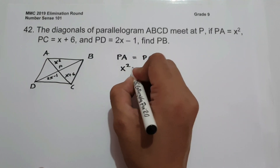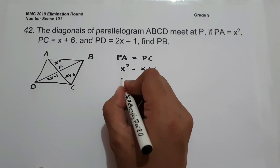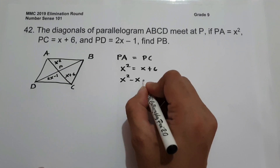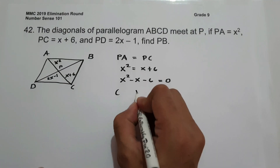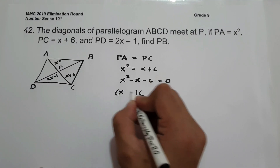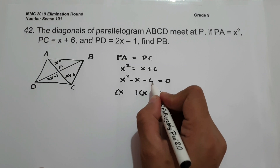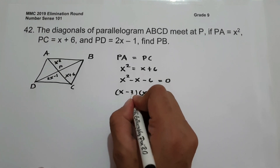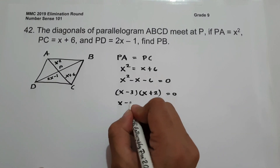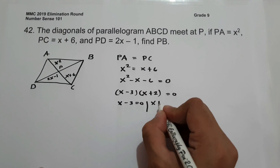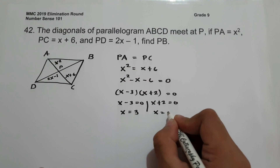So we have x squared equals x plus 6, and moving x plus 6 to the other side gives us x squared minus x minus 6 equals 0. Let us find the factors: the factors of x squared are x and x. The two numbers that multiply to negative 6 and add to negative 1 are negative 3 and positive 2. So we have x minus 3 equals 0 and x plus 2 equals 0, giving x equals positive 3 or x equals negative 2.